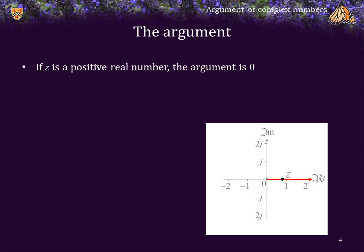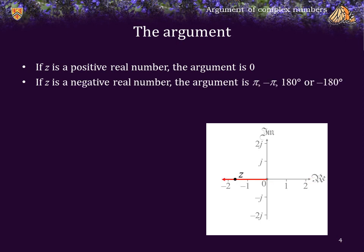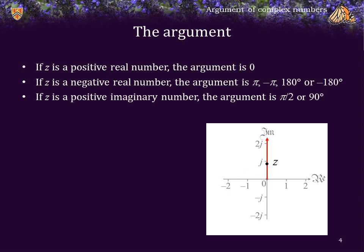If z is a positive real, the argument is 0. If z is a negative real number, the argument is π radians, -π radians, 180°, or -180°, depending on which direction you are taking the angle from. If z is a positive imaginary number, the argument is π/2 or 90°.